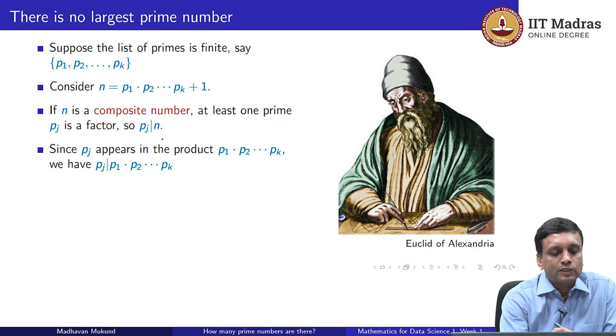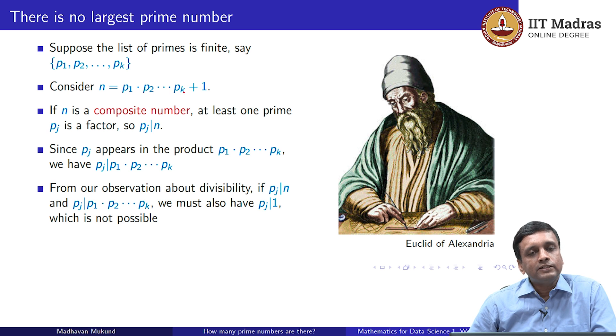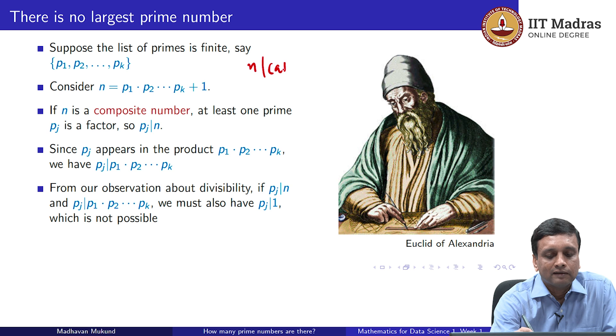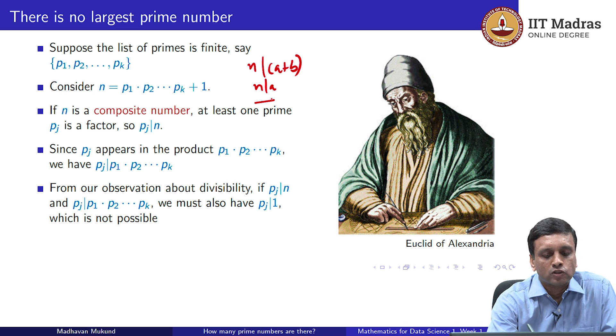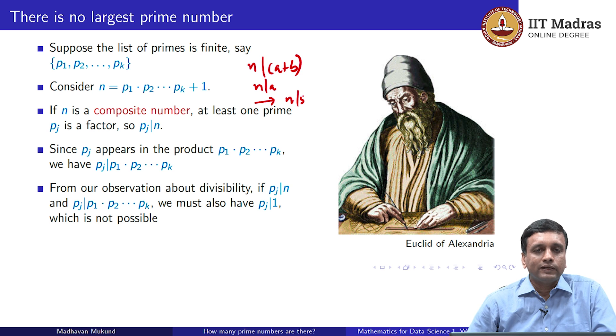But on the other hand, let us look at this part, the first part. The first part is the product of all the primes. So, pj appears in that product. If it is one of the factors of the product, it must divide the product. So, pj divides n and pj also divides one part of the sum. Remember what we said: if some number n divides a plus b and if n divides a also, then n must divide b. In this case, a plus b is the product of the primes plus 1 and a itself is the product of the primes, and we have argued that there is 1 prime pj which divides both of these. Therefore, by that divisibility result that we showed in the previous slide, pj must divide 1. But of course, we know that pj is a number bigger than 1, it cannot divide 1. And so, we have a contradiction.